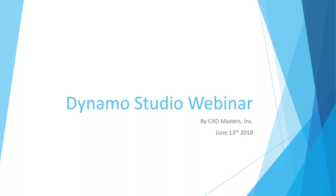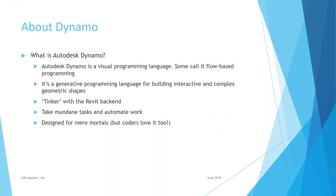First we'll talk about what Dynamo is. Autodesk Dynamo is a visual programming language. It allows you to control both the BIM parameter aspects for schedules — parameters you might have difficulty editing or have too many of to edit in the time you're allotted — and also for creating complex geometric shapes.